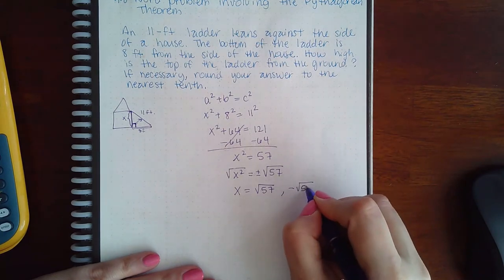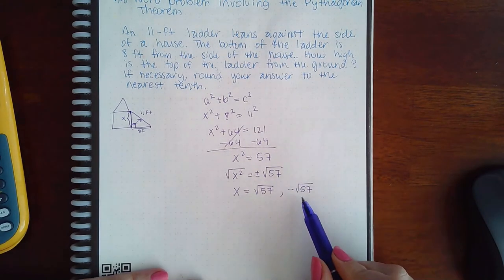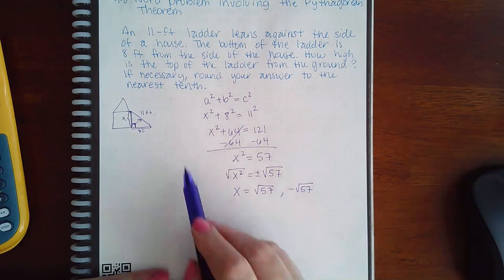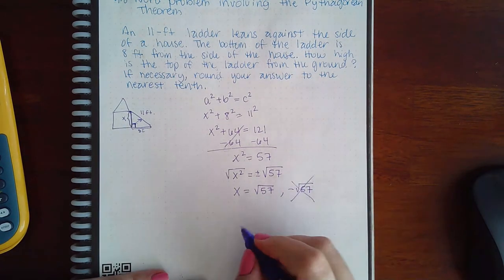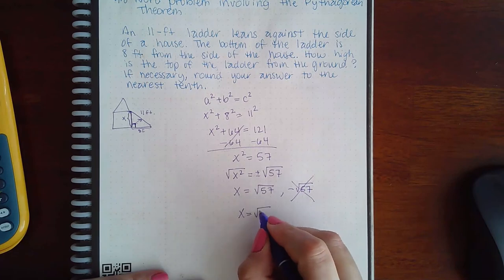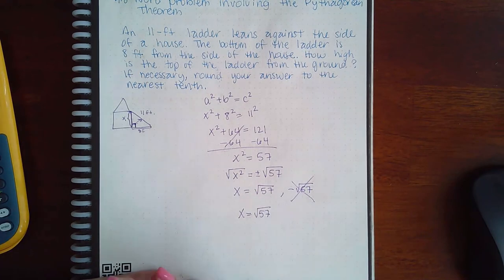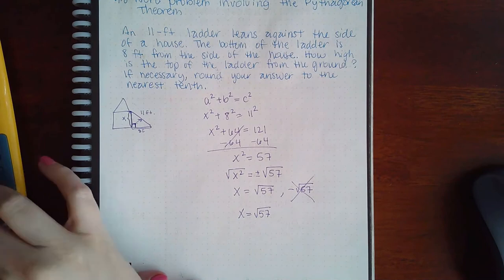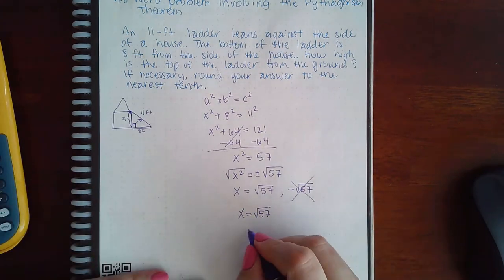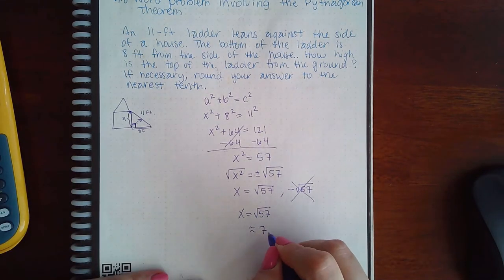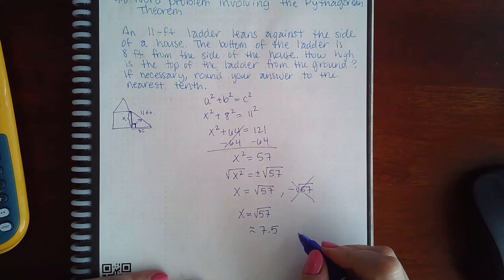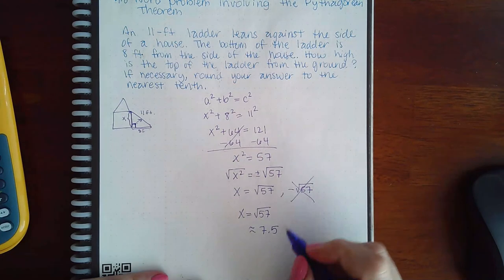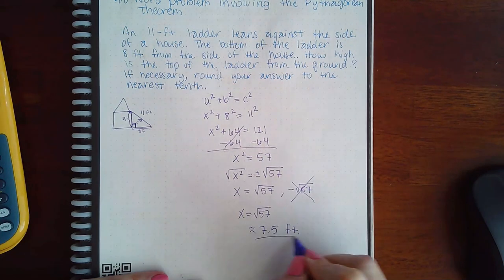Now, we've already talked about how the side length cannot be negative, so this doesn't make sense. The only solution we have is positive square root of 57. However, it does say we can put it in as a decimal, and that is approximately 7.54 or 7.5. The ladder was 11 feet, so this should be in feet as well.